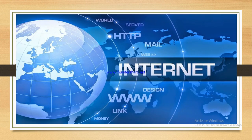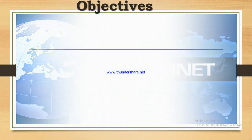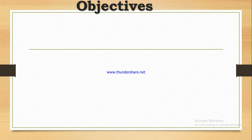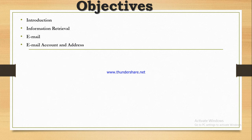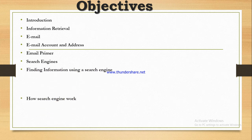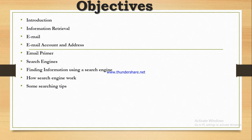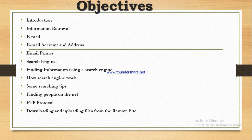In this chapter we will learn about internet services. The objectives of this chapter are: introduction, information retrieval, email, email accounts and address, email primer, search engines, finding information using a search engine, how search engines work, some searching tips, finding people on the net, FTP protocol, downloading and uploading files from the remote site, and remote login and file transfer protocol. These are the topics we will read in this chapter.